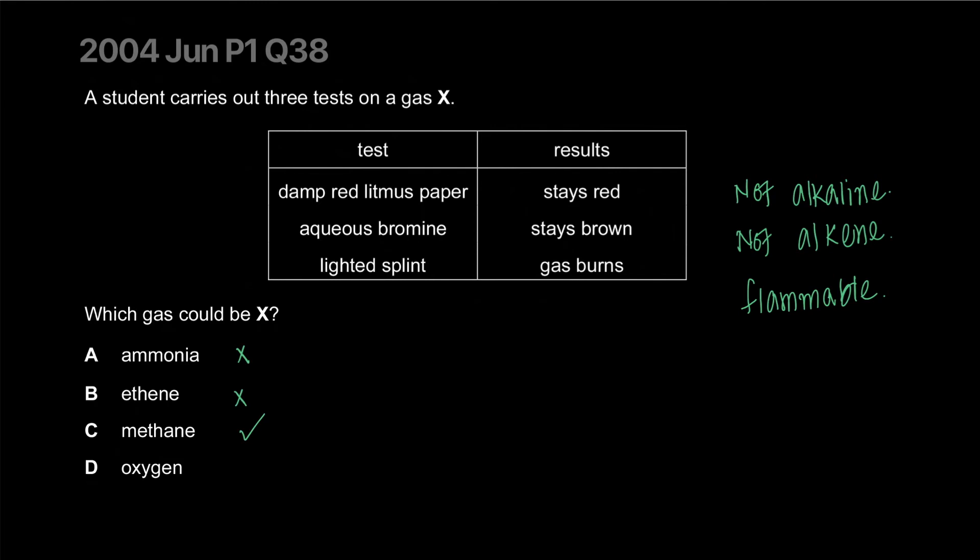Why can't it be oxygen? Because the gas doesn't really burn. The splint will burn more brightly if oxygen gets exposed to it. The gas itself is not really burning. Something burning is something reacting with oxygen and giving off a lot of heat. The correct answer is C.